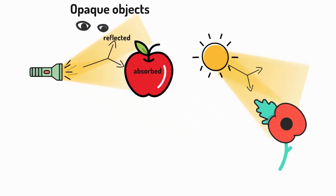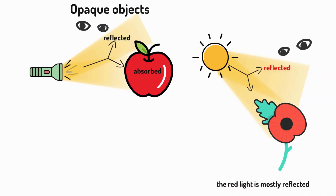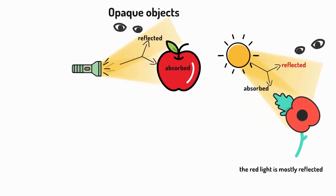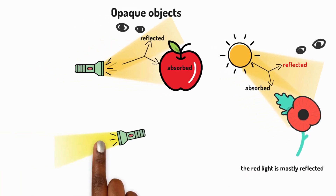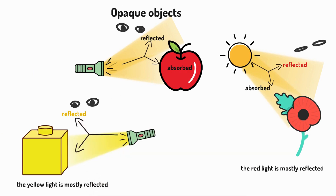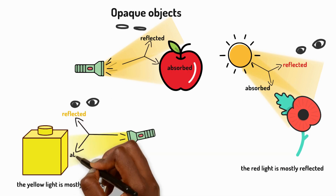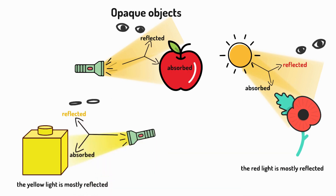To give an example of this, when sunlight hits a red flower, the red light is mostly reflected but the other colours are absorbed, so this makes the flower look red. For yellow objects, yellow light is mostly reflected but the other colours are absorbed, making the object look yellow.